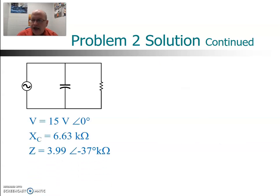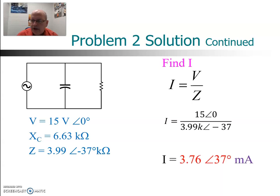So we're going to use that along with the voltage in Ohm's law. I is equal to V over Z. V is given, Z we just found. Do the arithmetic on your calculator, you should get a current of 3.76 milliamps angle 37 degrees.